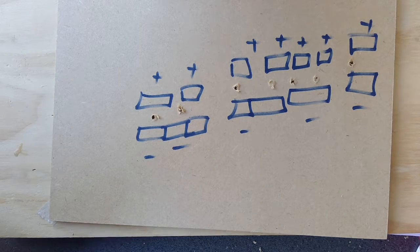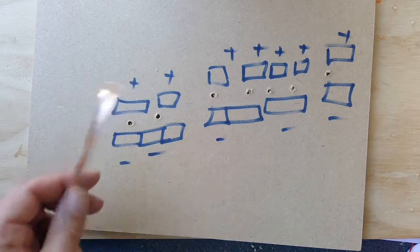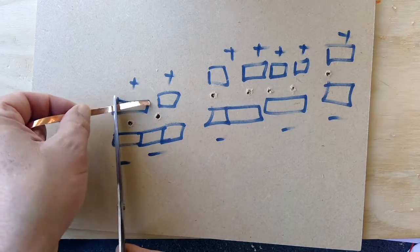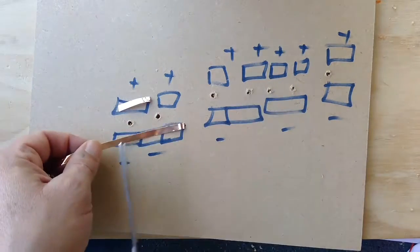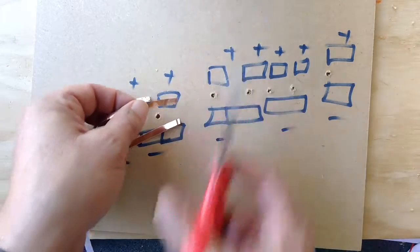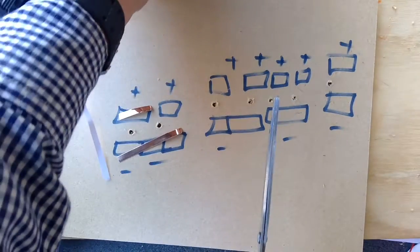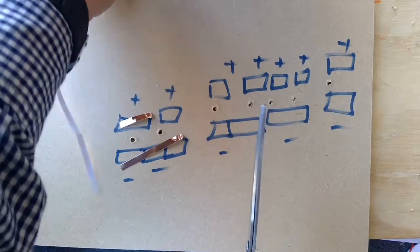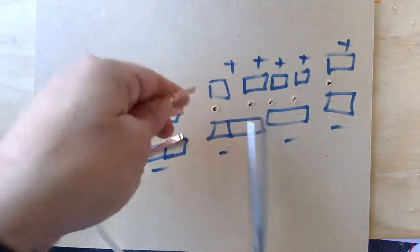The next step, what you're going to do is you're going to cut bits of copper strip for each section that you need. So I'll cut that. I'll cut some copper for that bit. Then I'll cut a bit.